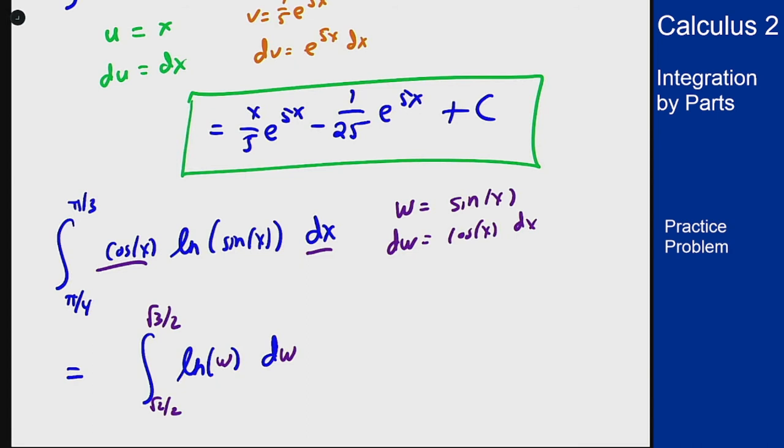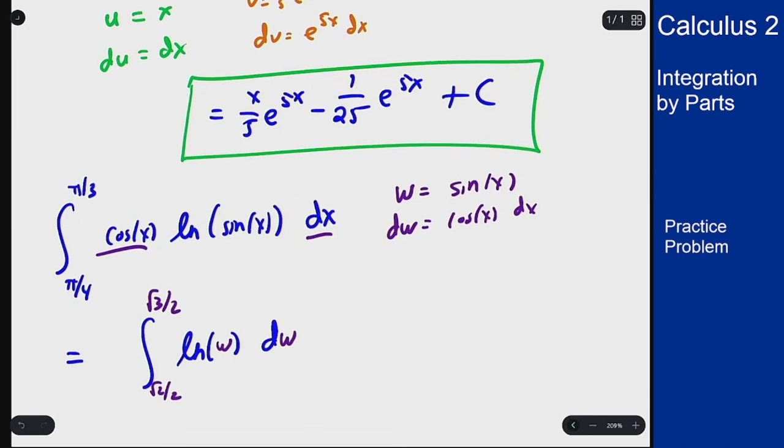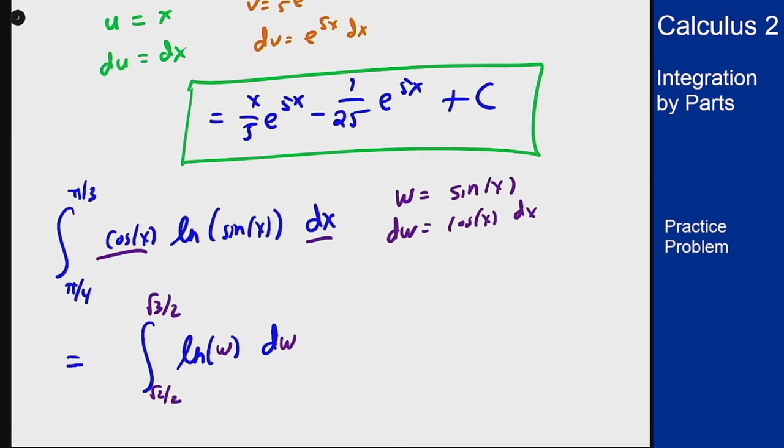I'm going to rewrite all this so it matches color-wise and now we're good to go. So now we're integrating the log function. We discussed a formula for this explicitly but we can also just use integration by parts again to derive the formula if you forget it on an exam. So the trick here is that integrating log is hard but differentiating it is easy. So I want to differentiate the log and then integrate just the dw or just the differential part of the integral.